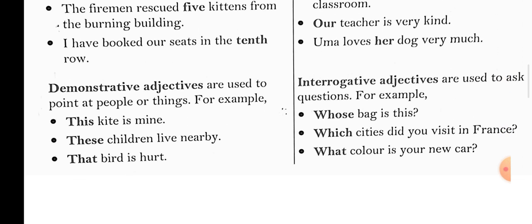Next, demonstrative adjective. These adjectives are used to point at people or things. For example: This kite is mine. These children live nearby. That word is hard. Here the words 'this,' 'these,' 'that,' and 'those' are called demonstrative adjectives.